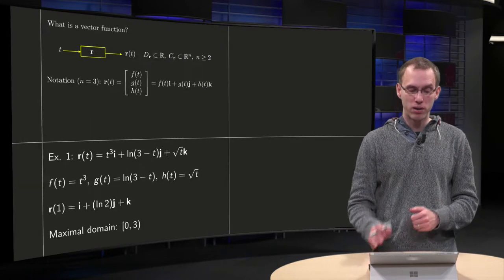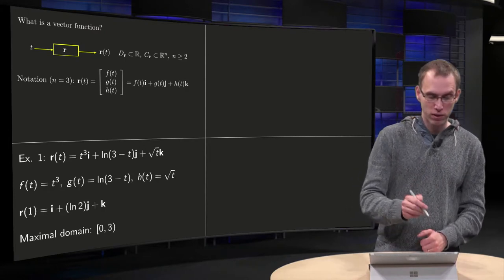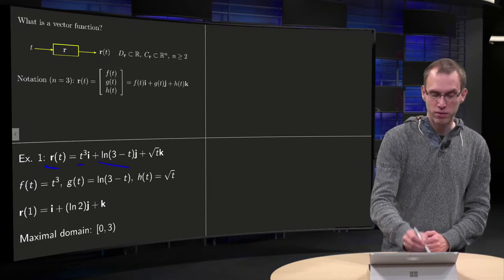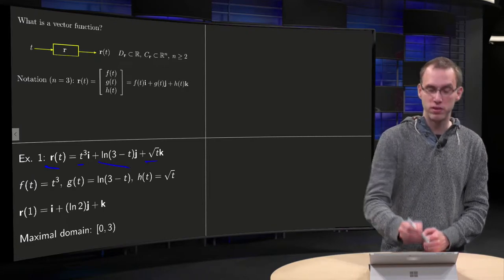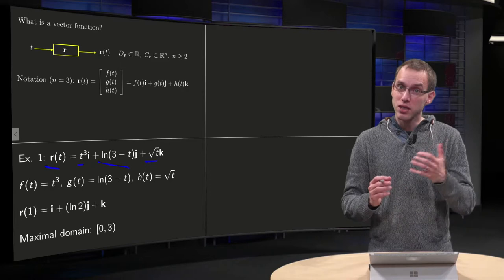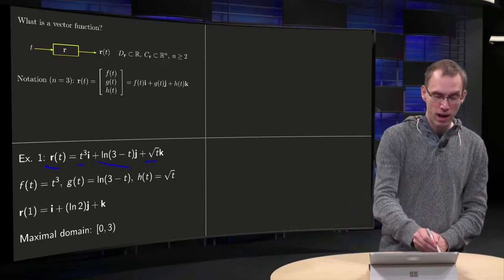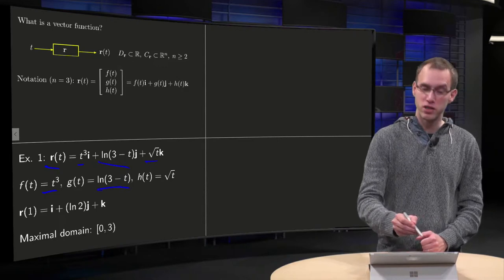How does this work? How can we do computations? Let's take for example, the vector function r(t) equals t³ times i plus ln(3-t) times j plus square root of t times k. So in this case we can read off what our f, g, and h are. f is t³, g equals ln(3-t), and h(t) equals the square root of t.